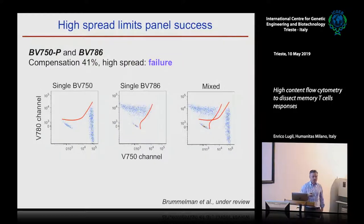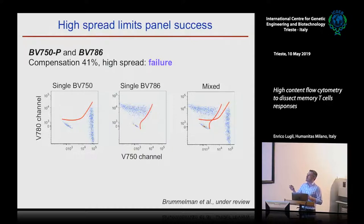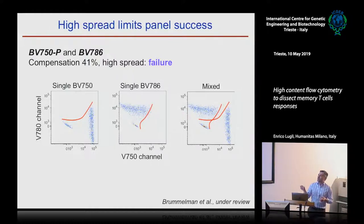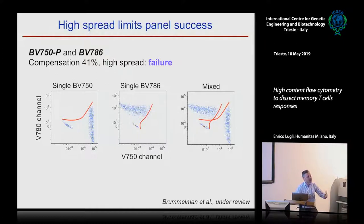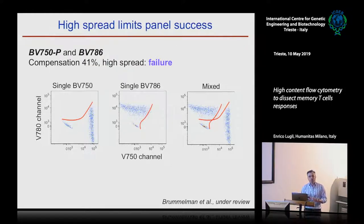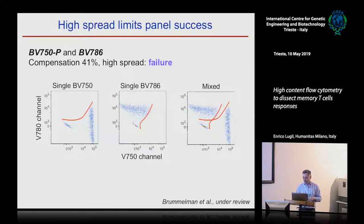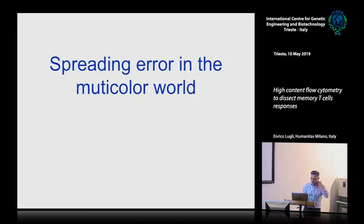Here's another example using BV750P and BV786. In this case, the compensation is only 41% — you would say that's fine. But look: you stain for a single BV750P, and a single BV786. When you compensate, the spread in the data is so high that you can't really distinguish the double positive population when you mix them together. So even though the compensation is low, the spread is so high that you cannot separate. It's not important how much you compensate — what's important is the spread in the data. So we're talking about spreading error in a multicolor world.